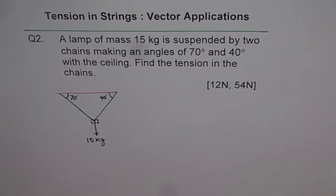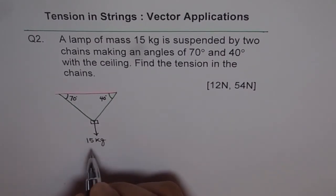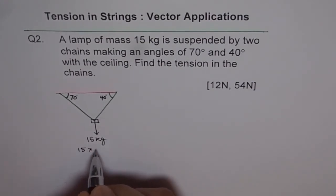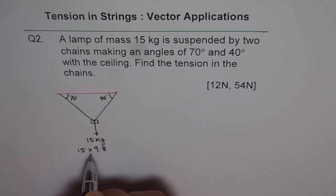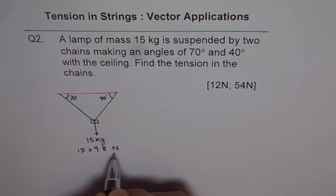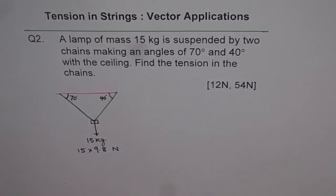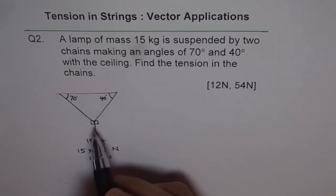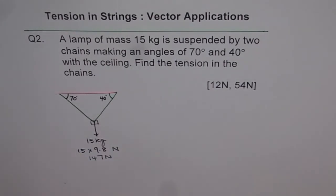As you know, every kilogram of mass is attracted toward the earth by a force of 9.8 meters per second squared. So it can be written as 15 kg corresponds to 15 times 9.8, and the unit of this force of attraction toward the earth is newtons. So we get this downward force.